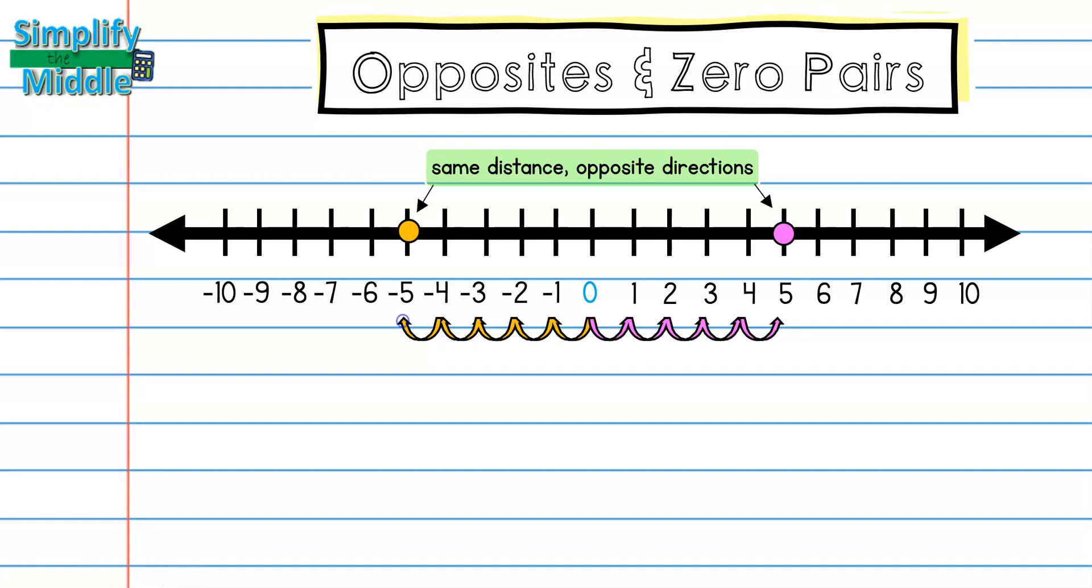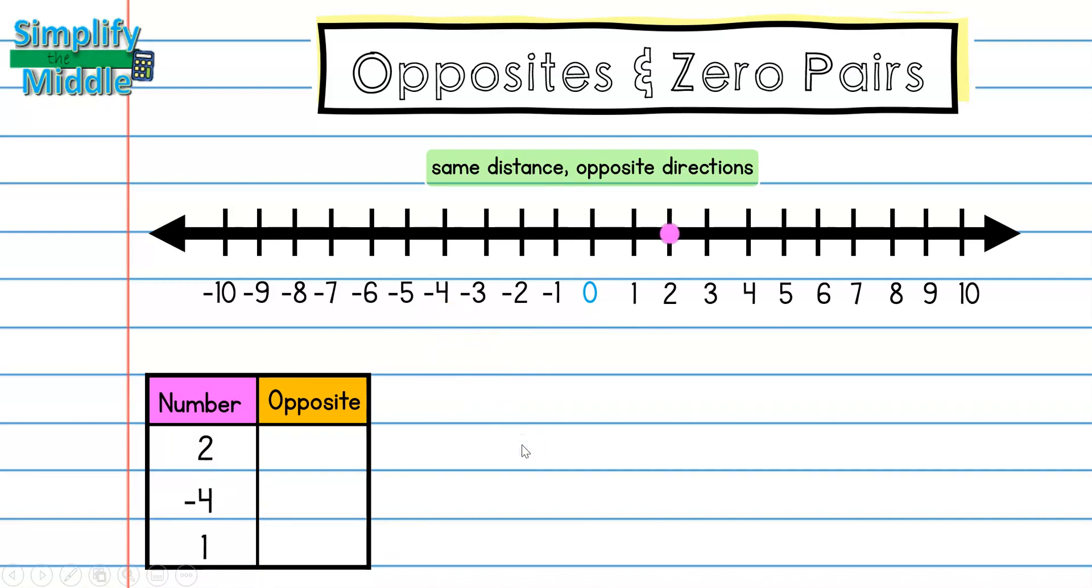Let's look at a couple more examples. If I have the number 2, I can clearly see that 2 is a distance of 2 away from 0. This time, that distance is to the right. So I'm going to want to go a distance of 2, but to the left. This is going to end up at negative 2. So we can say the opposite of 2 is negative 2.